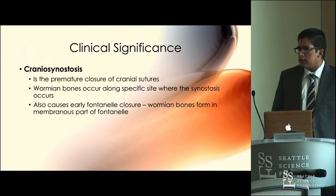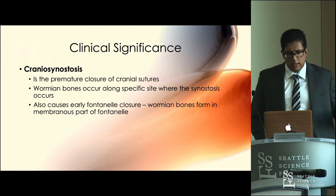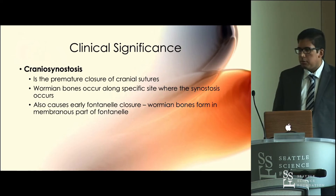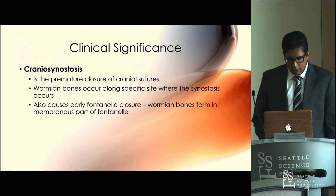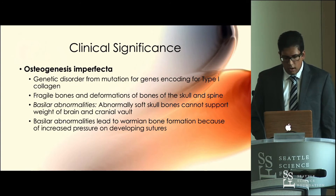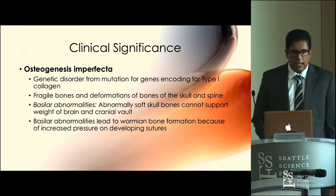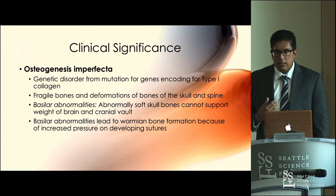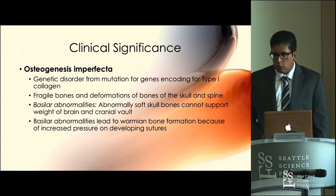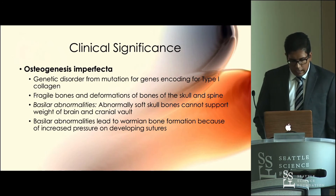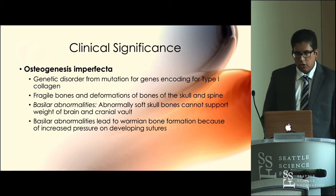The two most common clinical anomalies associated with wormian bones are cranial dysostosis and osteogenesis imperfecta. Cranial dysostosis refers to premature closure of the cranial sutures, and when these sutures close prematurely, wormian bone formation can occur at the site of synostosis. Osteogenesis imperfecta is a genetic disorder from mutation of the genes for type one collagen; the end result is fragile bones prone to fractures. In the skull, this causes basilar abnormalities due to abnormally soft skull bones that can't support the brain, and those abnormalities lead to wormian bones from increased pressure on the developing sutures.